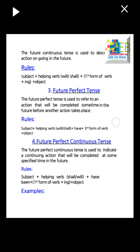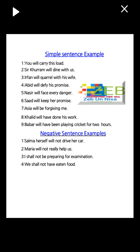Simple sentence examples for future tense: number one, you will carry this load. Number two, Sir Qamar will dine with us. Number three, Arfan will call with his wife. Number four, Abid will defy his promise. Number five, Nisa will face every danger. Number six, Saad will keep her promise. Number seven, Asia will be forgiving me. Number eight, Khalid will have done his work. Number nine, Barber will have been playing cricket for two hours.